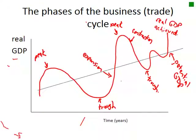Now let's look at the phases of the business or trade cycle. The dotted line represents potential GDP — a reminder that potential GDP is like the PPF where all of your available resources are being used efficiently. Fluctuating around potential GDP, we have real GDP, which is sometimes above potential and sometimes below.